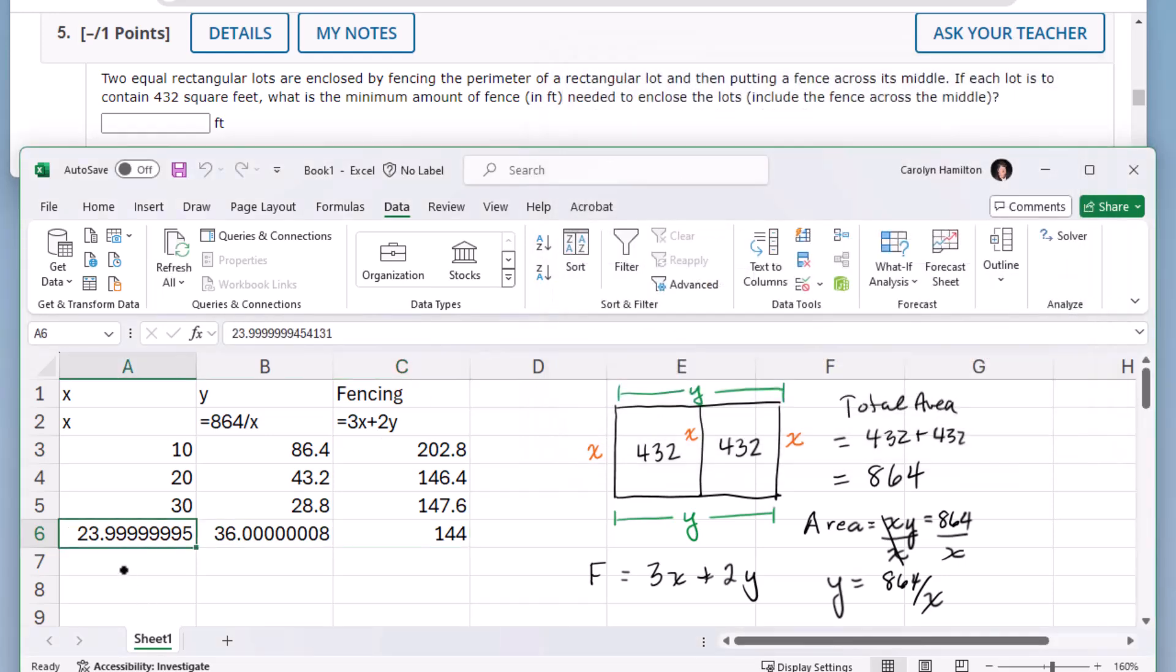That would be 24, which makes the y 36, and the total amount of fencing is 144.